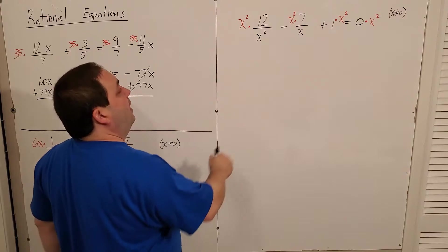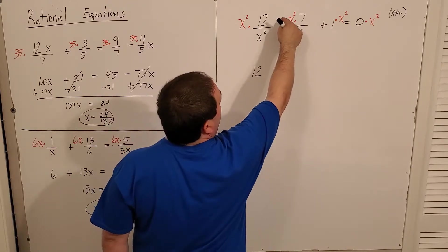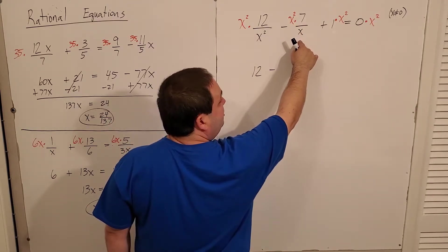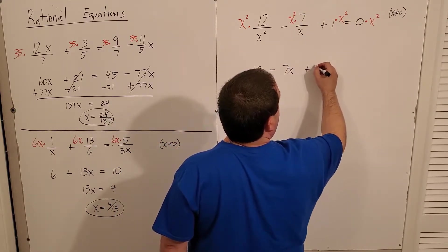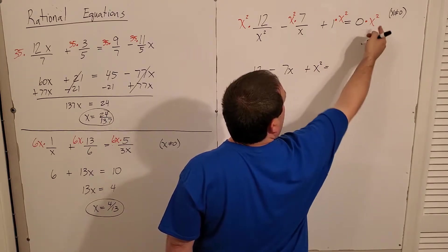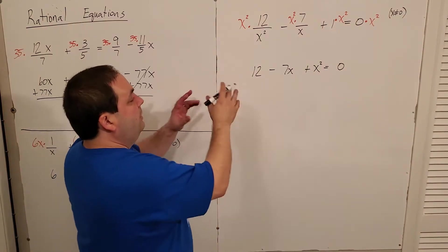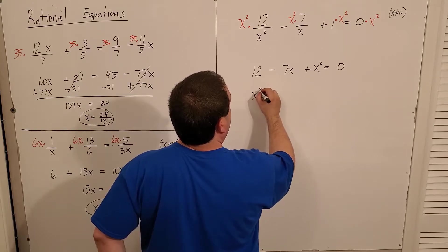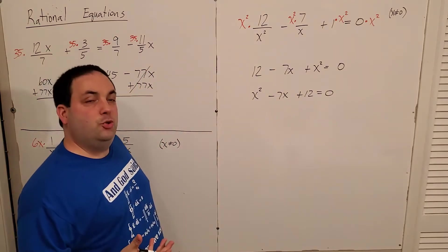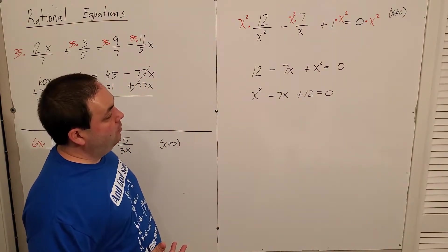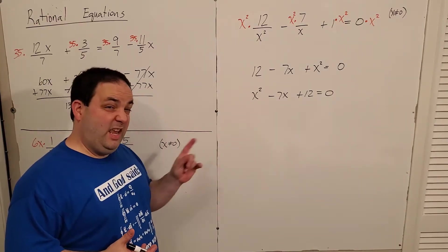So let's simplify. x squared over x squared is one times 12 is 12 minus x squared over x is just x times seven is seven x. One times anything is itself and zero times anything is still zero. Looks to me like we got a quadratic. Let's rewrite it in standard form. And then you have a choice. Do I want to factor or formula? Well, remember the quadratic formula is meant to be speedy. But if you can see a factorization right away, that's going to be a little bit quicker just because it's less writing.